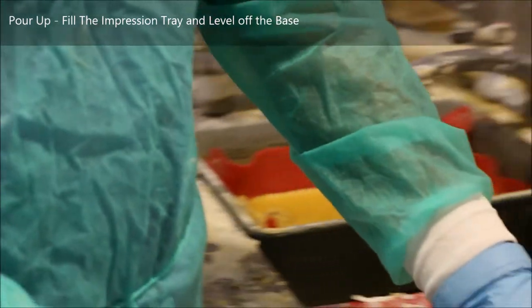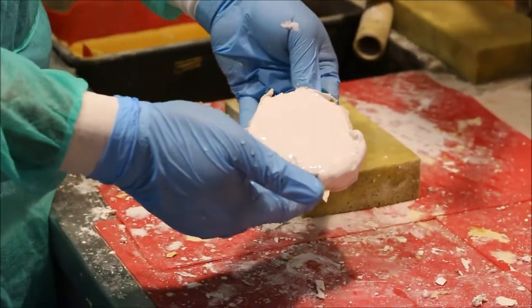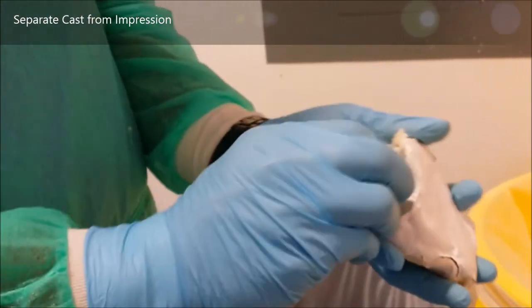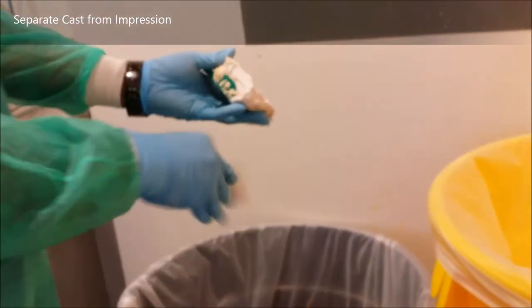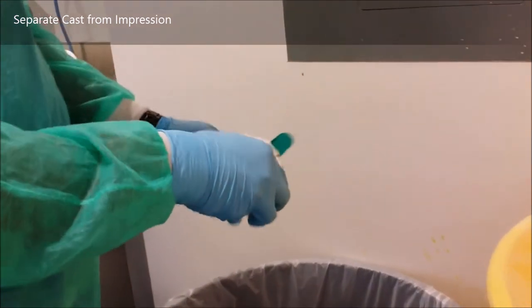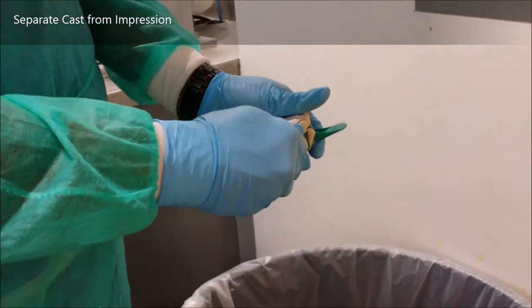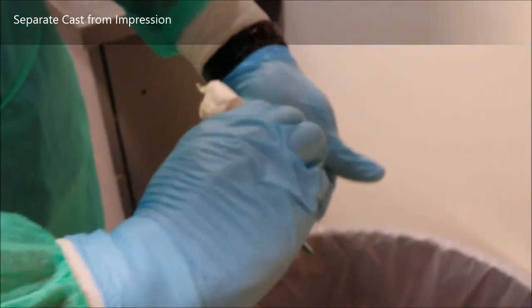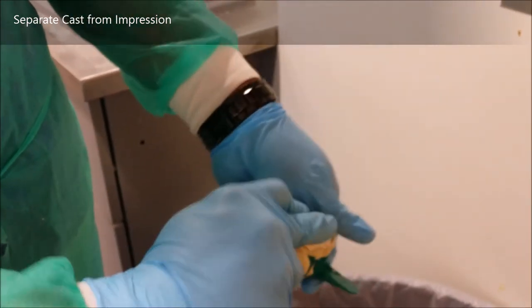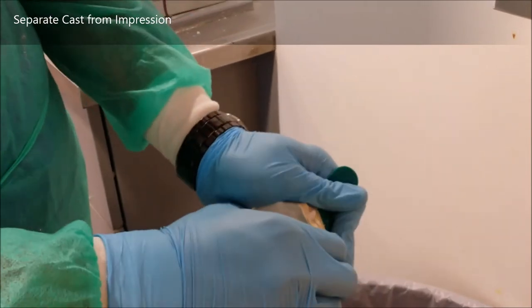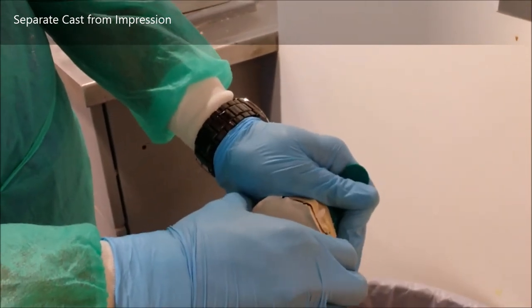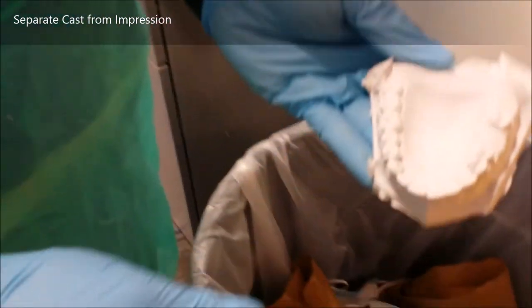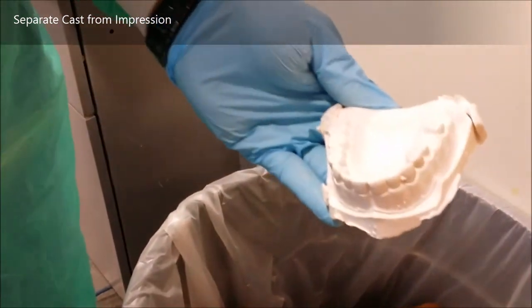Now when you're removing the plaster cast from the impression, you can try to lift it directly out, but generally this tends to be a little difficult. Since alginate impressions cannot be poured out multiple times, it's easy to simply rip the alginate off of the sides and then very carefully separate the plaster, not applying too much torque. You can get rid of your impression and inspect the cast.